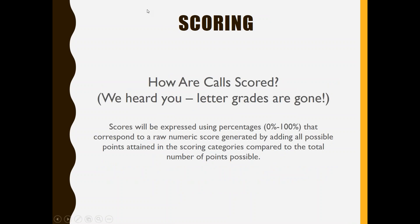Scoring — this is just about how calls are scored. One thing we got a lot of feedback on with Exam is that people did not like receiving letter grades. As adult professionals, not wanting to have your current work graded basically the same way as a Lord of the Flies book report in eighth grade — I totally get that. So what the new system, ScoreBuddy, does is it just works in percentages. All scores are expressed from zero to a hundred. The scorecard is the same one we had used before — everything corresponds to a raw numeric score generated by adding all points attained in the scoring categories and comparing to total points possible.